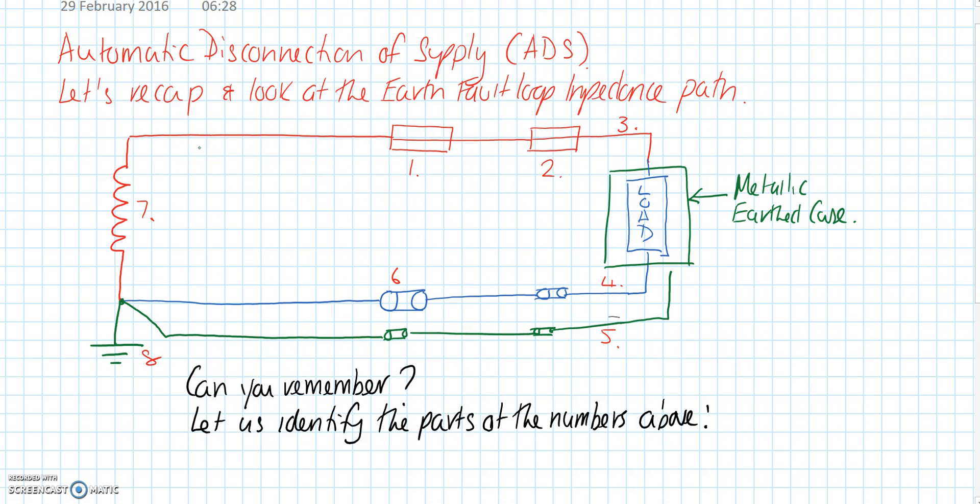Here on the screen is a typical distribution circuit. I'm hoping you can identify what the parts are. Number seven is our substation winding, our supply. Number one is the consumers fuse, number two is the fuse in the final circuit distribution board, three is our live cable, our line, known as R1.